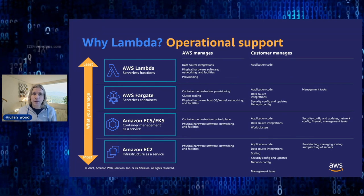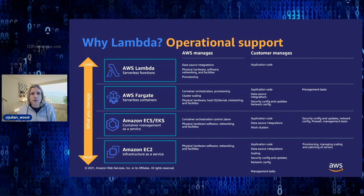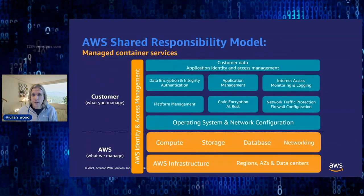Development teams currently using containers might ask: why Lambda? As a compute option, Lambda has several interesting and unique characteristics. It's the general compute option that provides the greatest level of operational support by AWS, designed to simplify implementation of high availability, scale, and security. Teams who want to shift the greatest amount of undifferentiated heavy lifting to AWS often start with Lambda. AWS has many compute services across the spectrum — from EC2 where you have all the knobs and levers, to Lambda where AWS takes on more of that operational support.